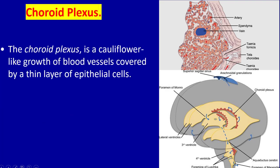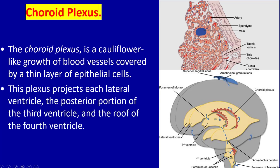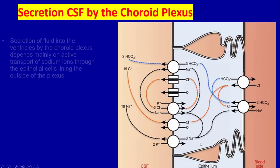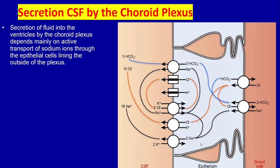The choroid plexus is a heavily flower-like growth of blood vessels covered by a thin layer of epithelial cells. This plexus projects into each lateral ventricle, the posterior portion of the third ventricle, and the roof of the fourth ventricle.